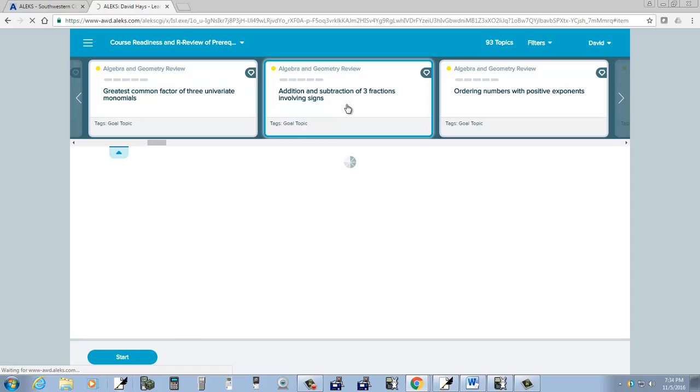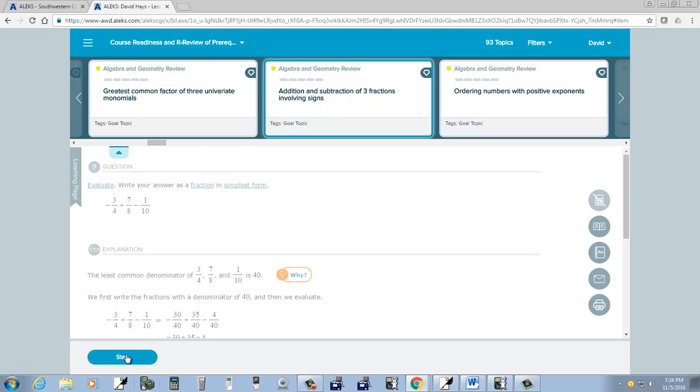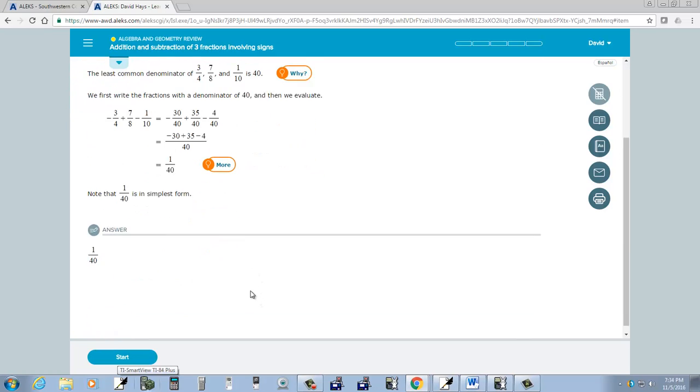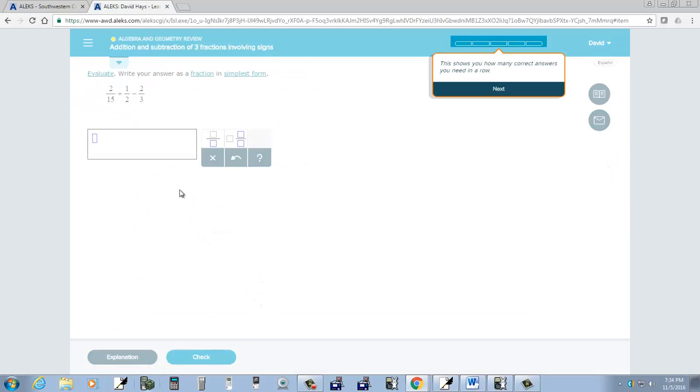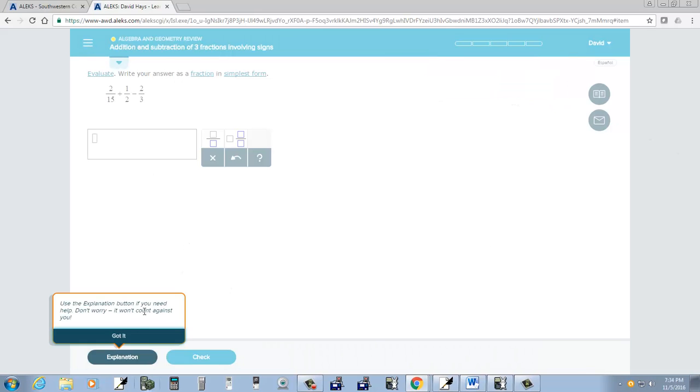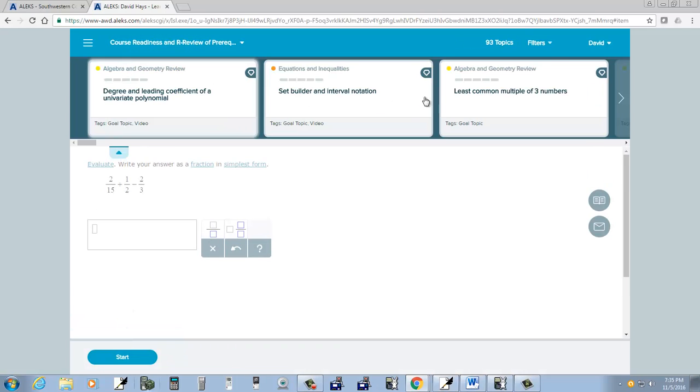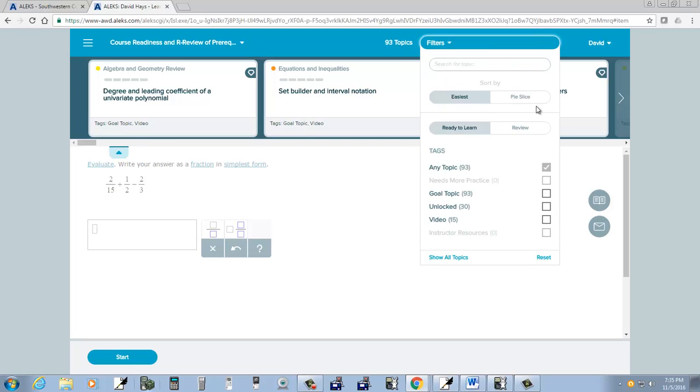So you can come through here. And you can pick different ones. Some of these are already locked though. You can't get to them until you finish other material. Here's addition and subtraction of three fractions involving signs. So this one looks like I could start it. Gives you some kind of explanation. Start. And then. These three together. Add and subtract I should say. Do the drop down here. You can apply filters. And from the filters here. You can choose goal topic. Easiest. Ready to learn. Show all topics. Reset that.